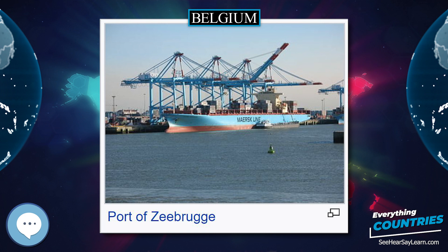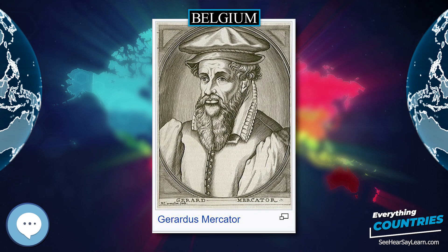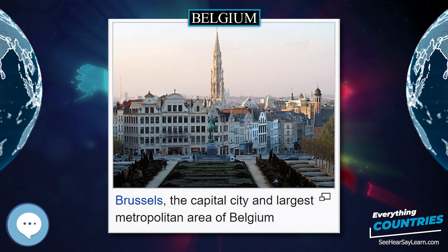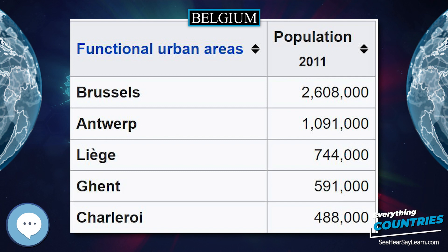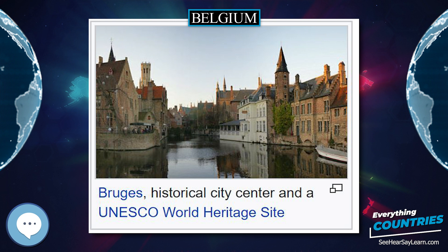Belgium has one of Europe's highest waste recycling rates. In particular, the Flemish region has the highest waste diversion rate in Europe — almost 75% of residential waste is reused, recycled, or composted. The territory of Belgium is divided into three regions: the Flemish region and Walloon region, which are subdivided into provinces, while the Brussels capital region is neither a province nor a part of a province.